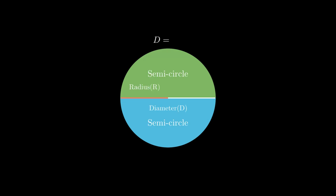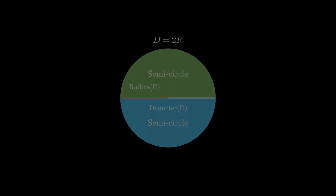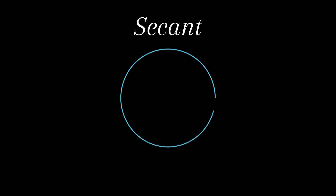The diameter divides the circle into two halves known as semicircles. Mathematically, diameter is twice the radius. Next is secant. The word secant is derived from the Latin word 'secare' which means to cut. Thus, a secant is a line that intersects the circle at two distinct points.